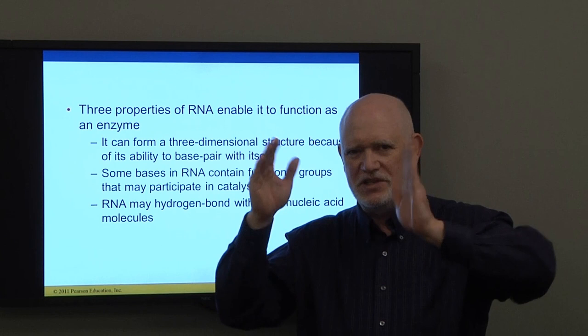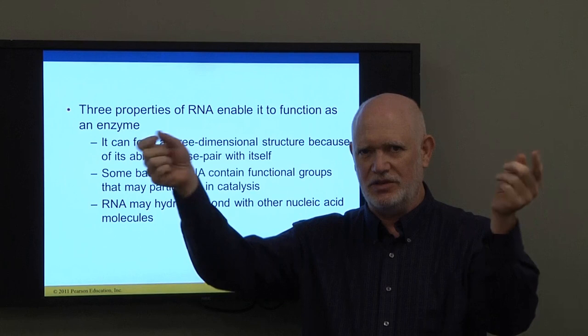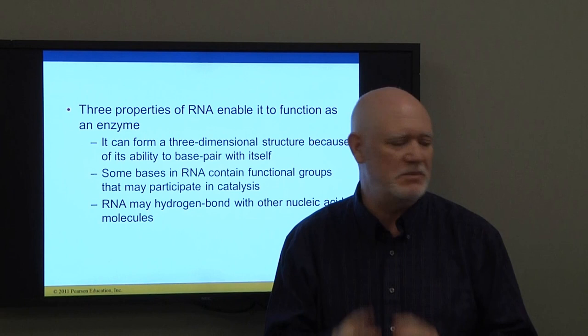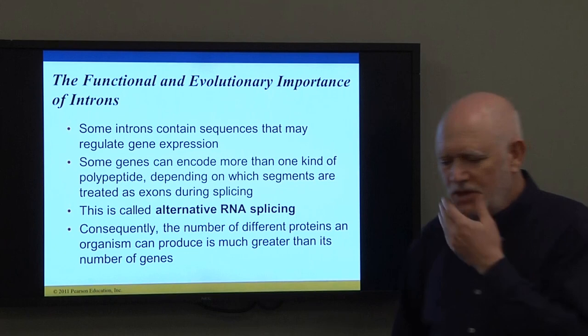Another thing that can happen with RNA is it can form a three-dimensional structure. Single-stranded RNAs can come together, form base pairs with themselves — the single-stranded RNA can loop up — and that actually happens in the ribozymes that carry out the splicing reactions.